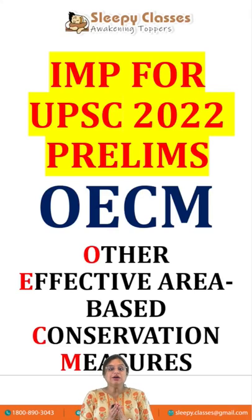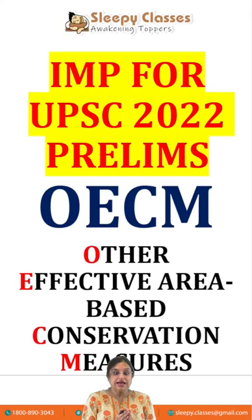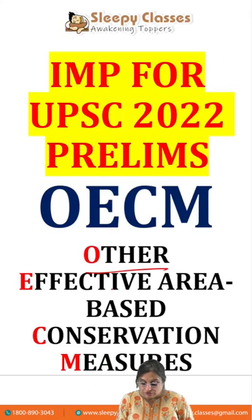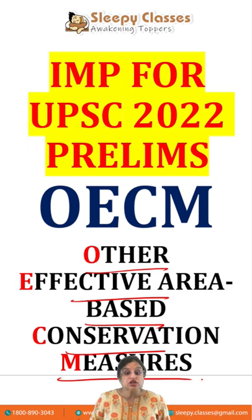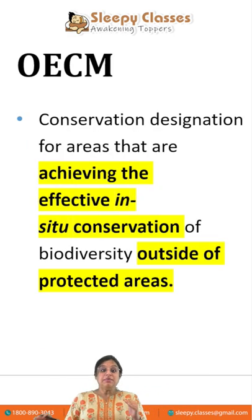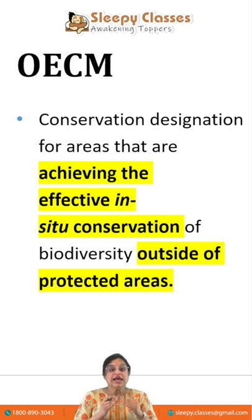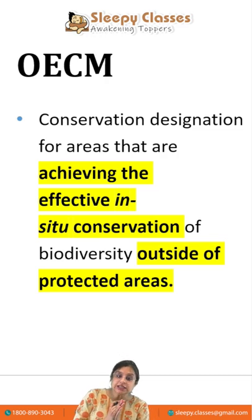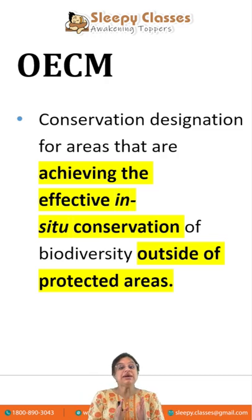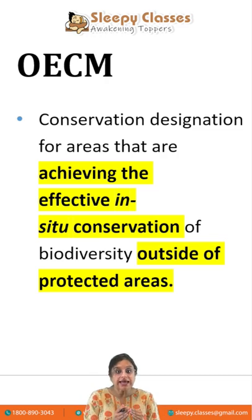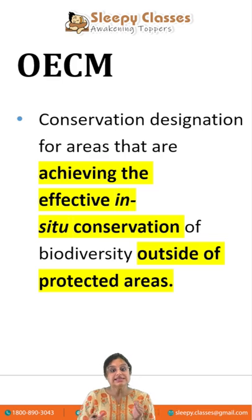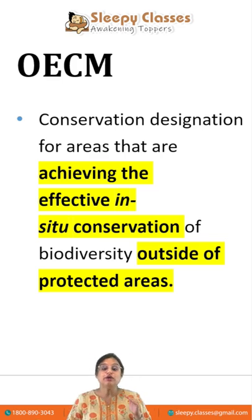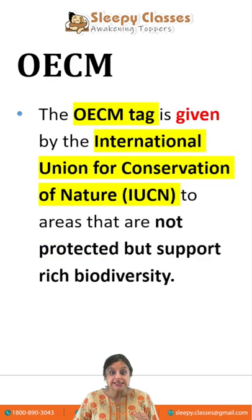Today, we will talk about OECMs — Other Effective Area-Based Conservation Measures. OECMs basically give a conservation designation to those areas. We need to conserve inside the area, but at the same time, these areas are outside of protected areas.